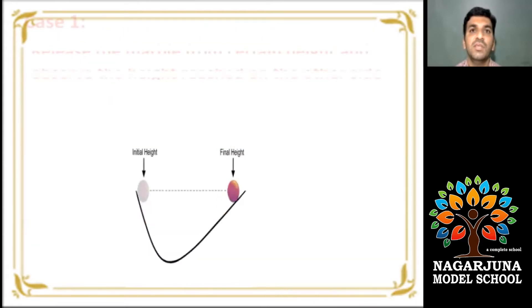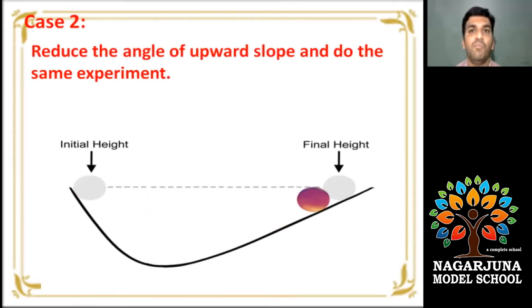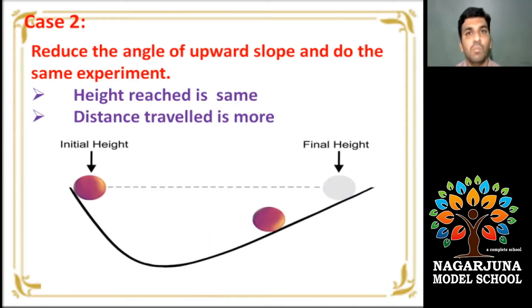In the first case, he released the marble from certain height and observed the height reached on the other side. What about the height reached by the body on the other side? Yes, it reaches the same height. In the second case, reduce the angle of upward slope and do the same experiment. Height altitude is the same, distance travelled is more. Isn't it? Yes.